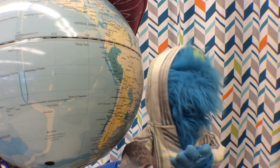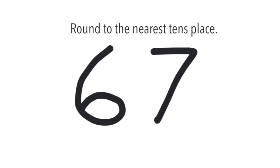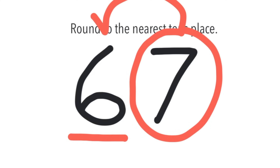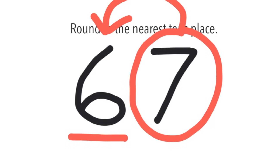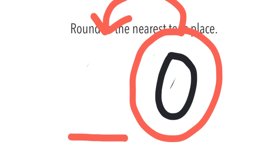But what if the number you circled is closer to 10? Let's try it. This time the number's 67. The directions say round to the nearest tens place. We underline the number we're working with, circle the number next to it — this number affects this number tremendously. Is the number you circled closer to 10 or 0? The number we circled is 7 — it's closer to 10. So we turn the 6 into a 0, and the other number goes up by 1. What's one number higher than 6? Is it 7? Bingo! And you're done.